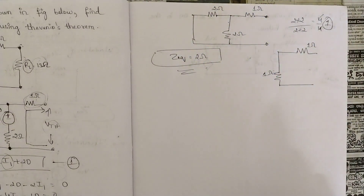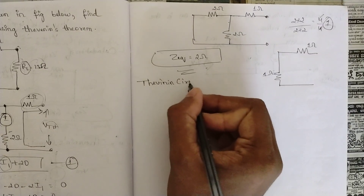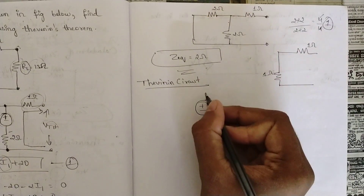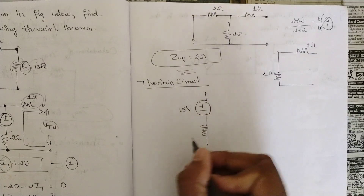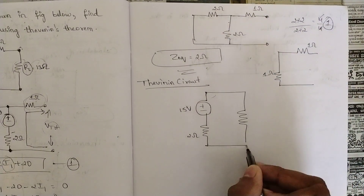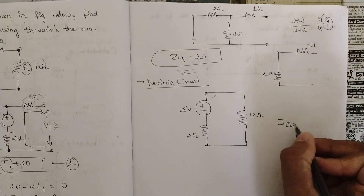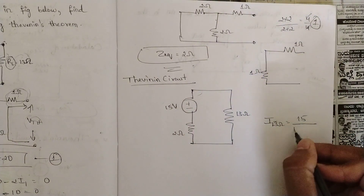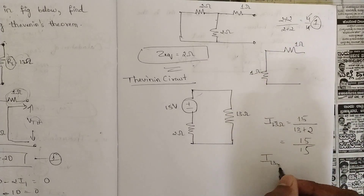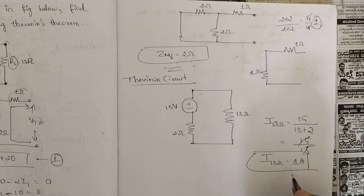The Thevenin circuit has Vth = 15V and Z_eq = 2Ω. To find the current through the 13Ω load resistance, reconnect it in series: I = V / (Z_eq + R_L) = 15 / (2 + 13) = 15/15 = 1 ampere. So the current through the 13Ω load is 1A.